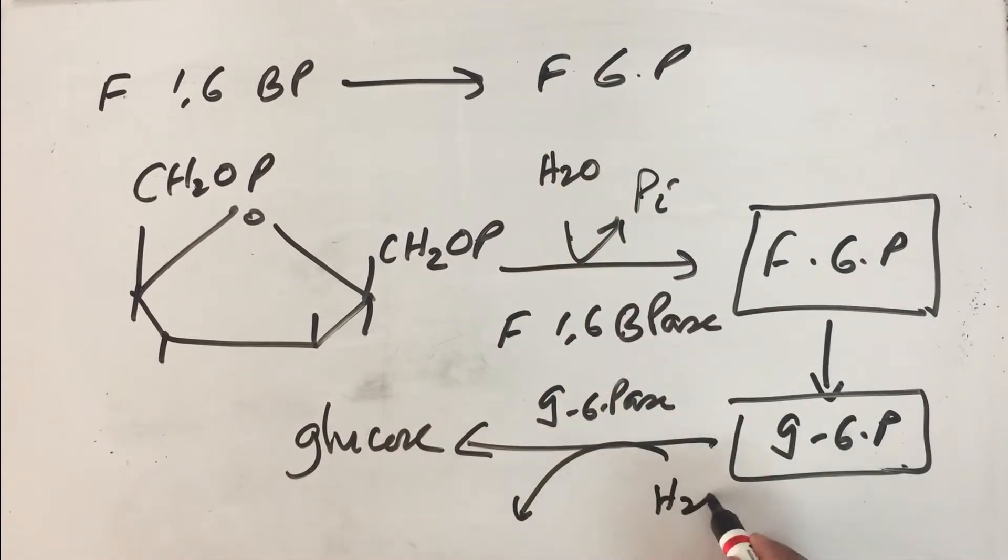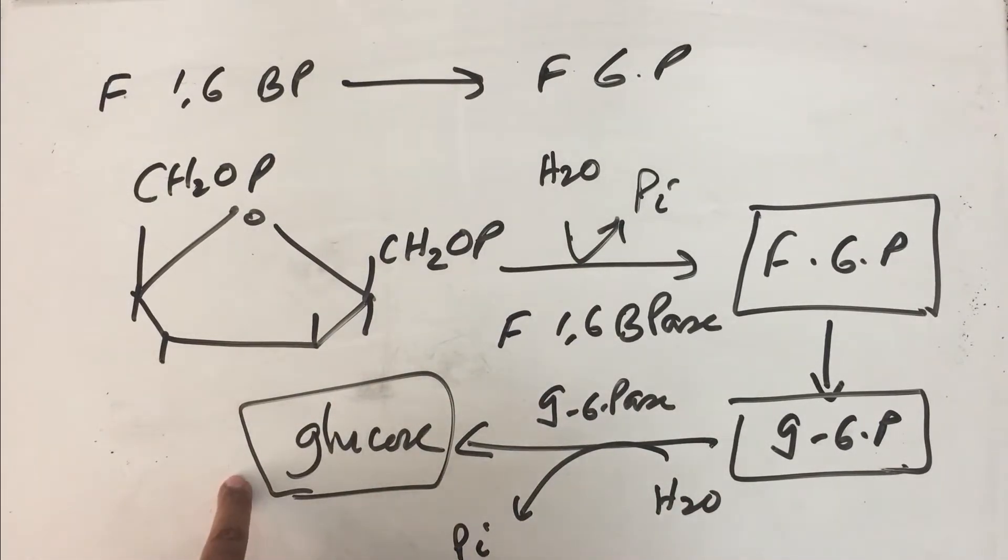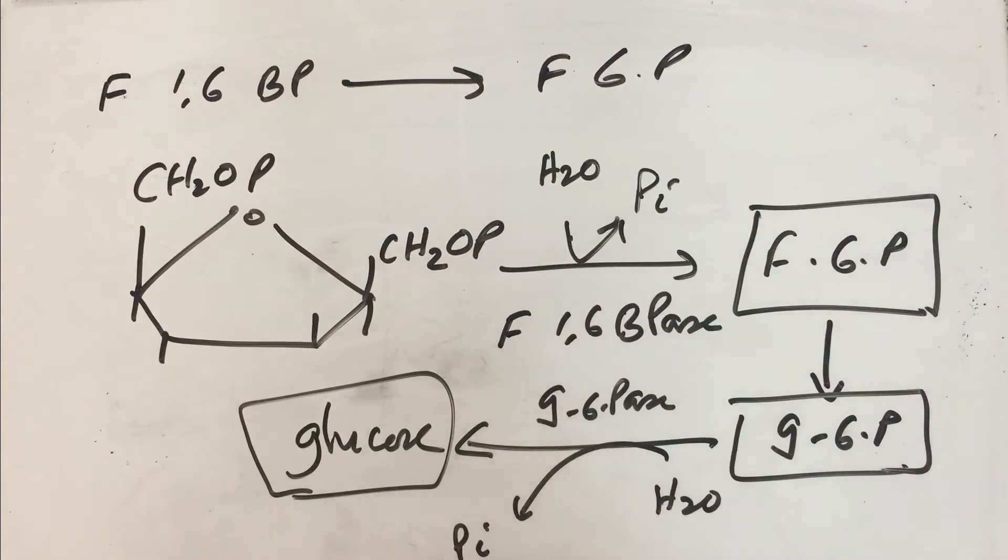A similar reaction occurs. Water molecule, inorganic phosphate is formed, glucose is formed. This is how it bypasses the third block in order to produce glucose. Now glucose is produced, but we need to look at this particular reaction in detail. Let us see how this whole process works and what is the significance of this reaction.